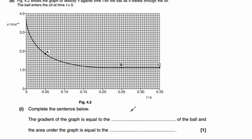So the gradient of the graph is equal to, well, for a velocity-time graph, the gradient is always equal to the acceleration of the ball. And the area under a velocity-time graph is always equal to the displacement.